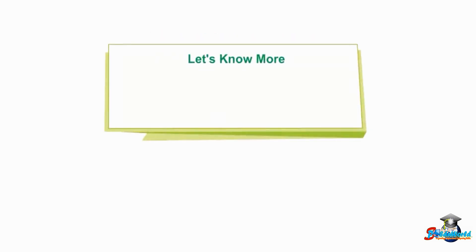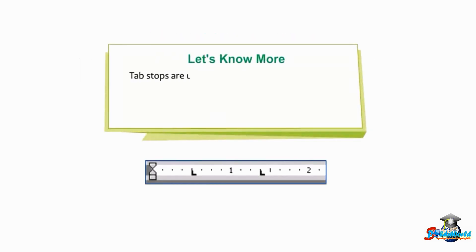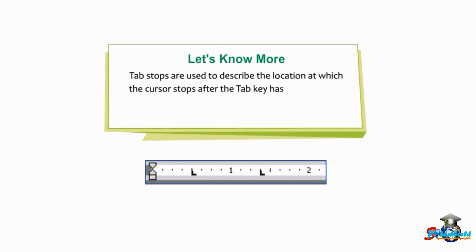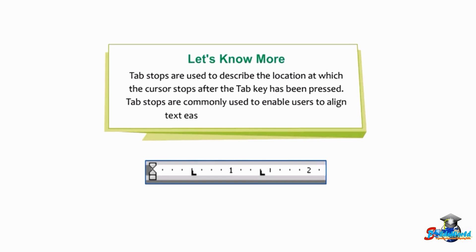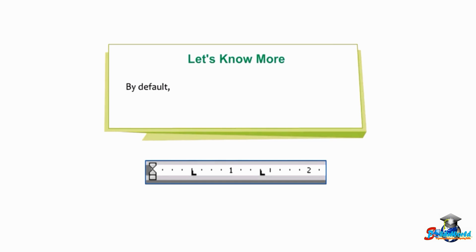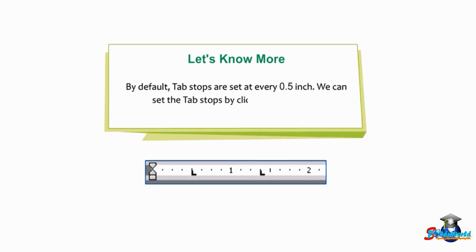Note that tab stops are used to describe the location at which the cursor stops after the Tab key has been pressed. Tab stops are commonly used to enable users to align text easily by pressing the Tab key. By default, tab stops are set at every 0.5 inch. We can set the tab stops by clicking on the ruler.